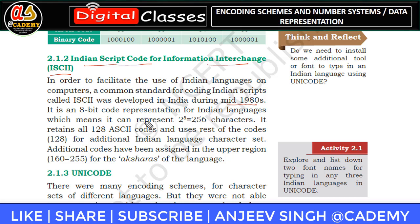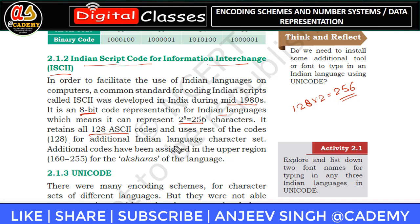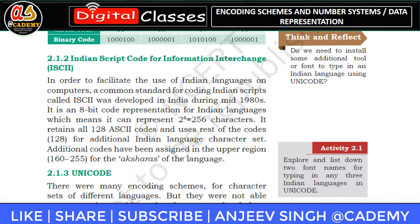ASCII is a 7-bit code, whereas ISCII is an 8-bit code for Indian languages. So the total characters that can be generated are 256, because 2 to the power 8 = 256. In ISCII, the first 128 codes are the same ASCII codes, and the remaining 128 additional codes — from 162 to 255 — are assigned to Indian language characters, meaning Hindi alphabets.